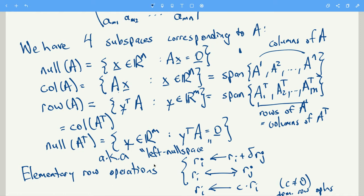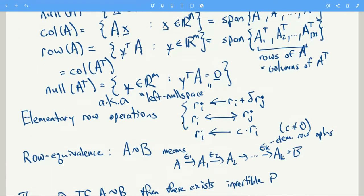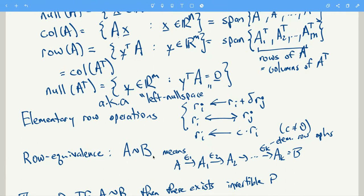And if you do a bunch of those in sequence, we get this notion of row equivalence. So A is row equivalent to B if there's a sequence of elementary row operations, epsilon 1, epsilon 2, all the way to epsilon k, such that doing each elementary row operation in sequence,